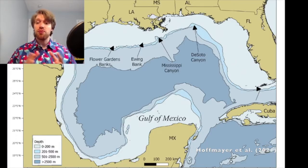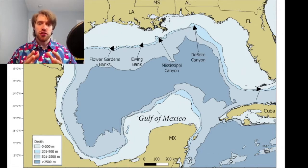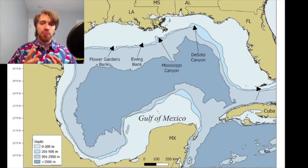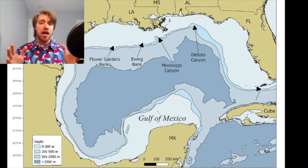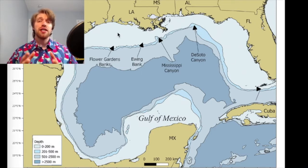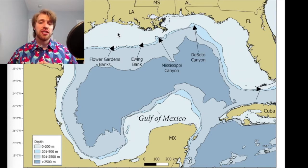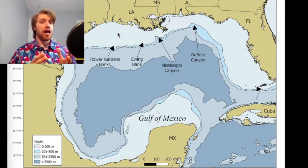Two things before I go into the main results. First, because this assignment is about the use of data visualizations in research, I will limit my discussion of results to only those discoveries that were enhanced by data visualizations. Second, I need to quickly define the habitat zones discussed in this paper. This map of the seafloor of the Gulf of Mexico is divided into four depth and habitat zones. The reason why depth is used to define a habitat zone in oceans is because each depth creates its own distinct ecosystem, and thus it is important to differentiate usage from one habitat to another.